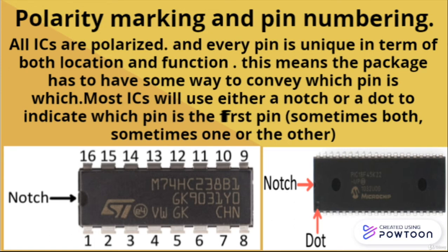This second IC has over 16 pins and indicates the first pin using both a notch and a dot. This is how we identify the first pin, and then we can number the pins: 1, 2, 3, 4, 5, 6, 7, 8, then continuing 9, 10, 11, 12, and so on.